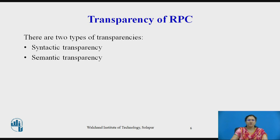Now we will see one of the major issues of RPC, that is transparency. The major issue in the design of RPC is its transparency property. A transparent RPC mechanism is one in which local procedures and remote procedures are indistinguishable to programmers — meaning the details are hidden. There are two types of transparency: syntactic transparency and semantic transparency. In syntactic transparency, an RPC should have exactly the same syntax as a local procedure call. In semantic transparency, the RPCs are identical to those of the local procedure calls.